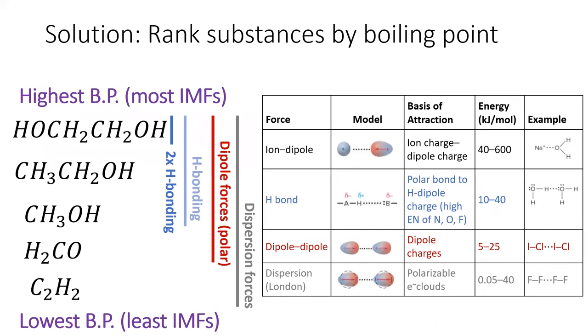To solve this problem, you need to identify what kinds of IMFs are in each substance. The substance with the most IMFs and the strongest IMFs will have the highest boiling point. The substance with the weakest or least IMFs will have the lowest boiling point. Of course, all these substances have dispersion forces since dispersion forces exist everywhere. But dispersion forces are quite weak and the molecule C2H2 only contains dispersion forces. So it will have the lowest boiling point.